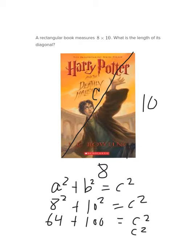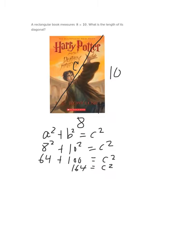C squared equals 164. Take the square root of each side. And I get c is equal to the square root of 164. That means c is equal to approximately 12.8 units. So that's the length of the diagonal. I was able to figure it out by using the Pythagorean theorem. Way to go, Pythagorean theorem. Thank you.